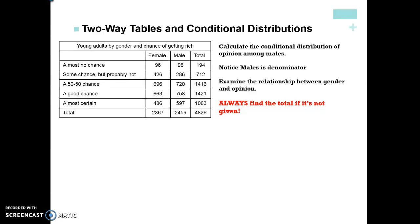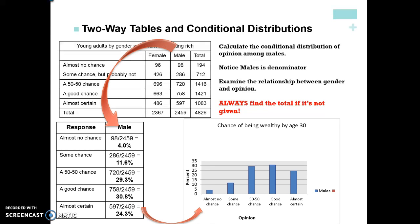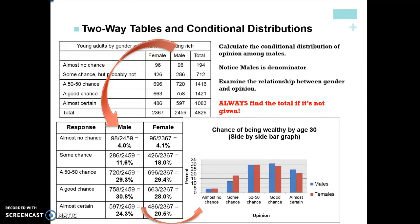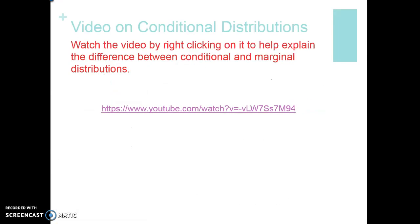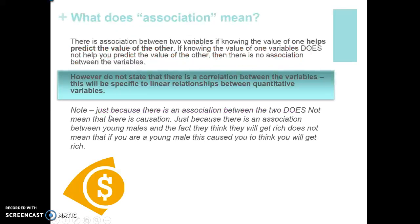When calculating a conditional distribution, make sure you always find the total if it's not given. If you're still confused on the difference between conditional and marginal distributions, click on the YouTube video link for a good explanation. Pause this recording — the last couple of sections in the next recording will look at the difference between association and causation.